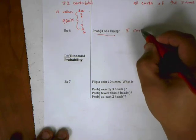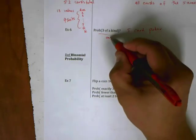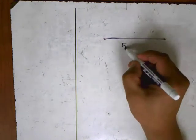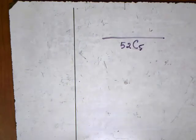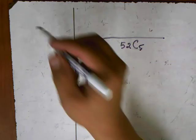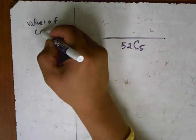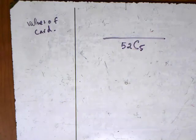The next question is: what's the probability of getting three of a kind in five-card poker? We only want exactly three of a kind — not four of a kind or anything else. The denominator will again be C(52,5). Unlike the flush problem where suit mattered, here we care about the face values of the cards.